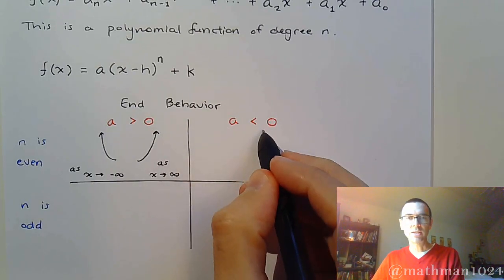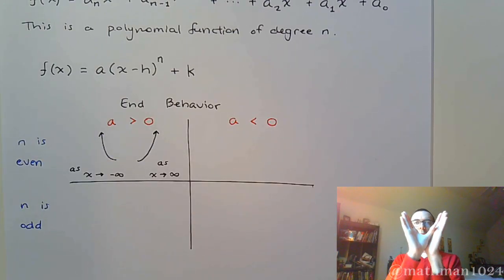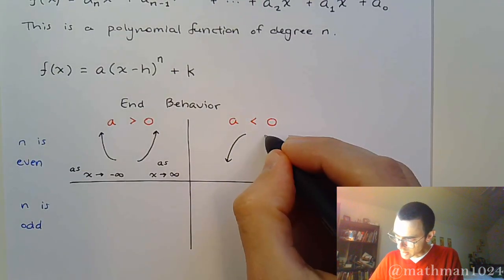If the lead coefficient is negative, less than zero, you know that in the past, we would take our parabolas and turn them upside down. And by turning it upside down, we see that our end behavior is now going to be going down on the left and down on the right.